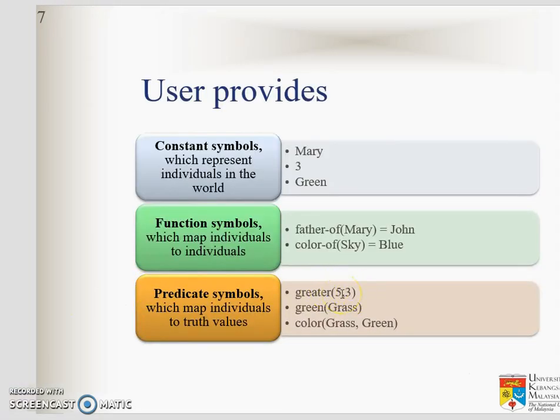And then, the predicate symbol. The outside, for example, this one greater, or green, or color could be the relation, function, or properties. The one inside is object.